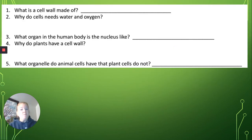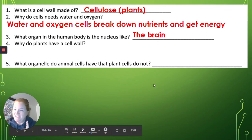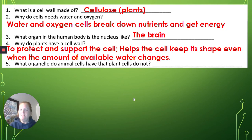So some review questions. What is the cell wall made of? You remember? Cellulose. Only in plant cells, remember? Do you know why cells need water and oxygen? Well, the water and oxygen help cells break down nutrients and get energy. What organ in the human body is the nucleus like? Remember? The brain. Why do plants have a cell wall? Do you remember? To protect and support the cell. It helps the cell keep its shape even when the amount of available water changes.